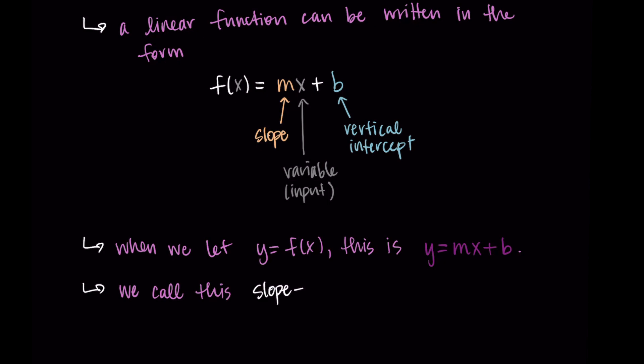This specific way to write a linear function is called slope-intercept form. We also have another way to write lines called point-slope form. We'll talk about that in a future video. But just know there are two ways we typically write equations of lines, but they can always come back to this slope-intercept form y = mx + b or f(x) = mx + b.